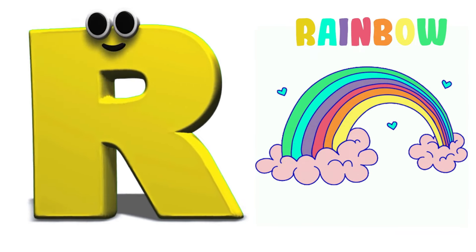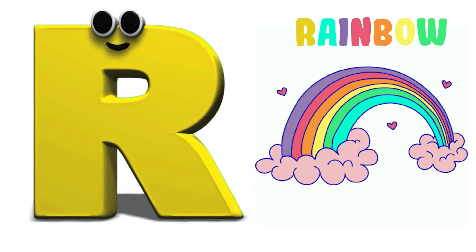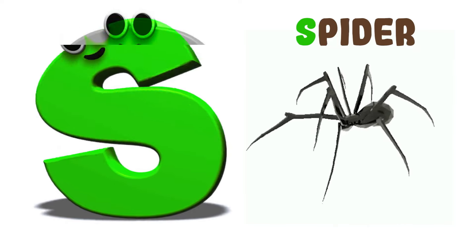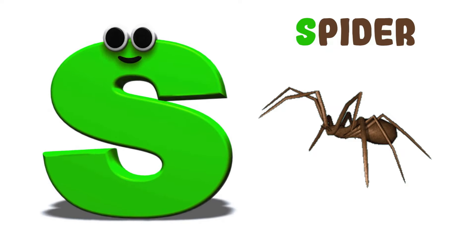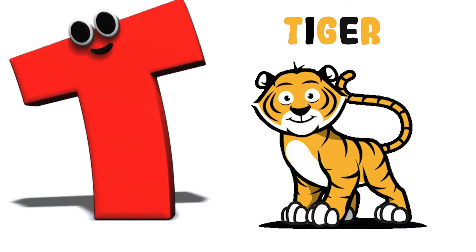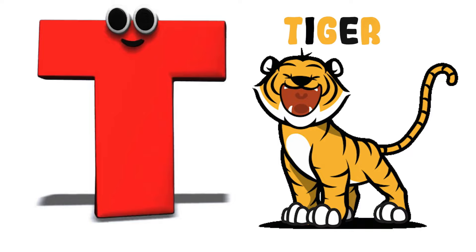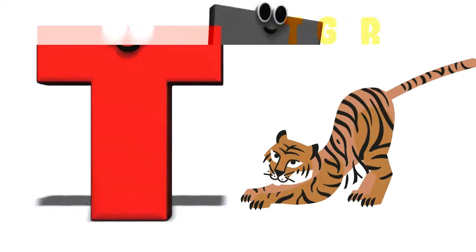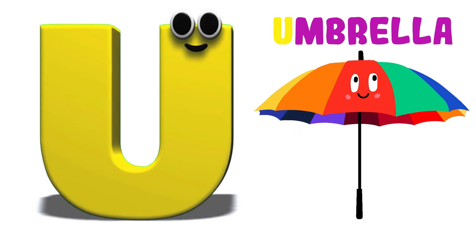R-Rainbow, R-Rainbow. S is for Spider, S-S-Spider, S-Spider. T is for Tiger, T-T-Tiger, T-T-Tiger, T-Tiger.